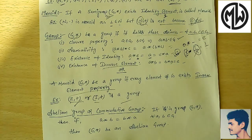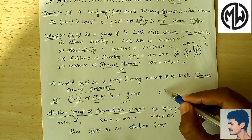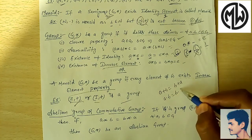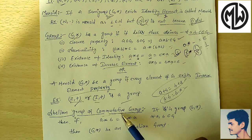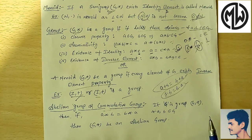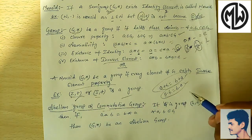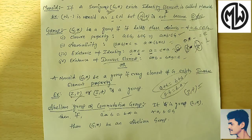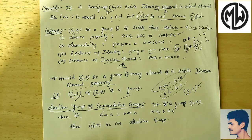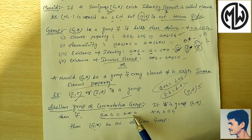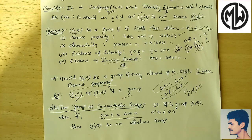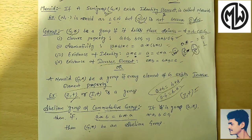Next is abelian group or commutative group. Commutative property: a + b = b + a for addition, and a · b = b · a for multiplication. An abelian group or commutative group is a group that also holds the commutative property. If (G, star) is a group where a star b = b star a for all elements, then it is a commutative group. As homework — check whether (Z, +) is commutative or not and comment on the video. Thank you so much, please share and subscribe to Maths Web.